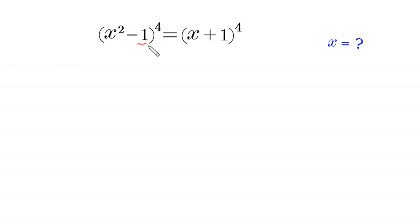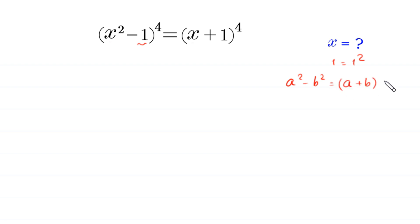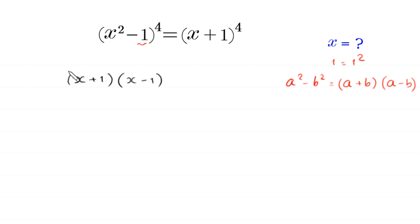Note that x² - 1 is the same as x² - 1². By using the algebraic identity a² - b² = (a + b)(a - b), this expression (x² - 1)⁴ becomes ((x + 1)(x - 1))⁴, which equals (x + 1)⁴.